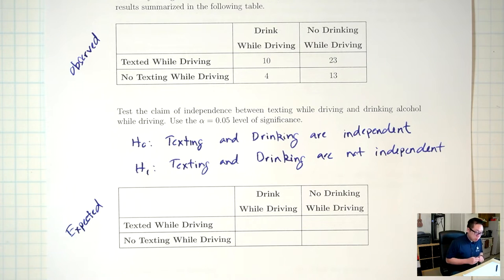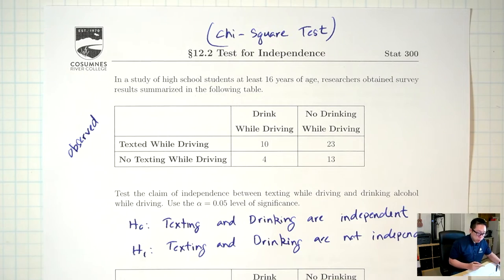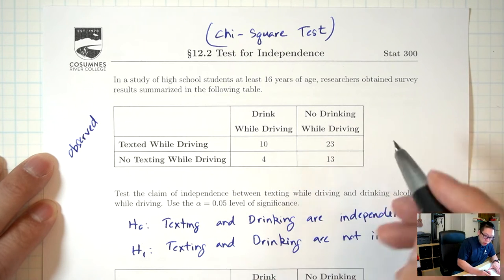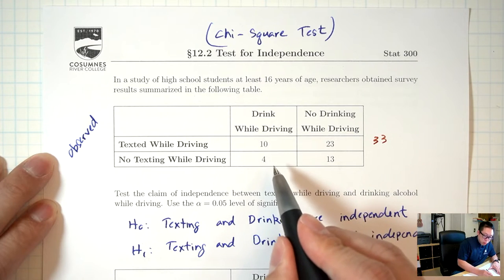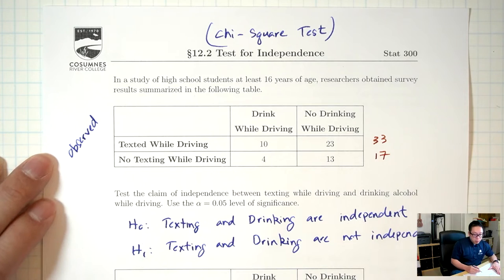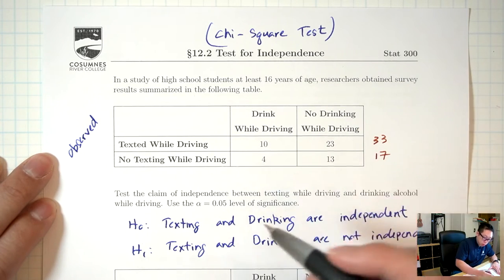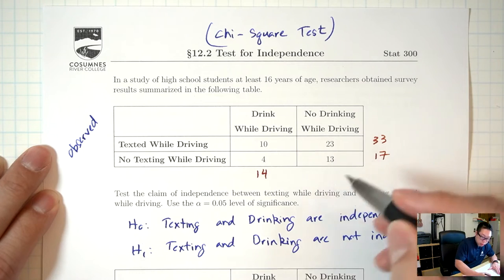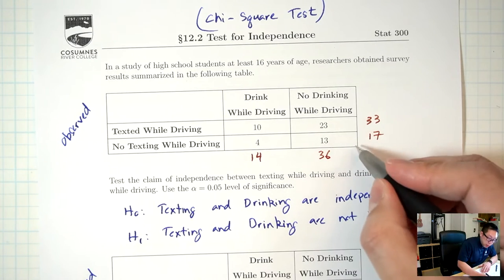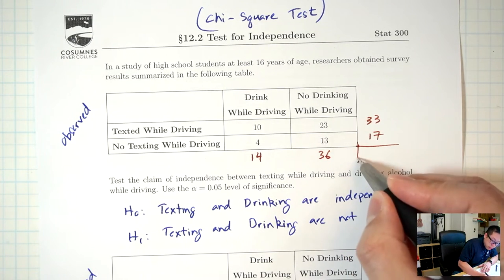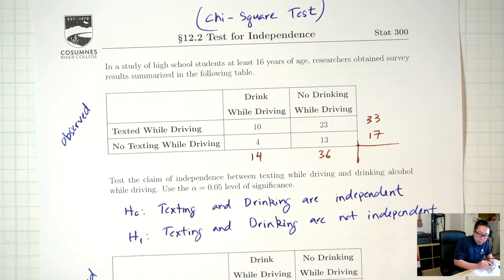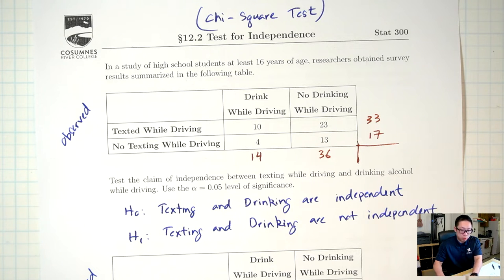To calculate the expected counts, I need to go back to my original table and find the row totals and the column totals. The total for the first row: 10 plus 23 is 33. The total for the second row: 4 plus 13 is 17. Those are my row totals. I also need my column totals: 10 plus 4 is 14 for the first column, and 23 plus 13 is 36 for the second column. Then I need the grand total — add up all the original numbers: 10 plus 23 plus 4 plus 13 is 50.